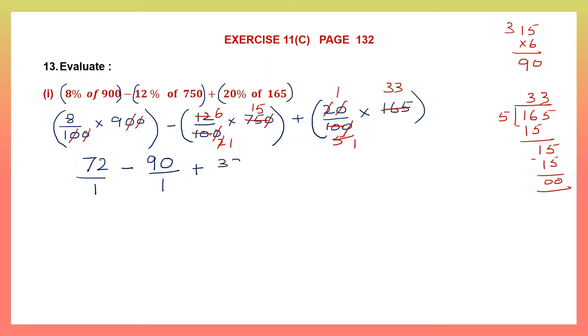So that becomes 72 minus 90 plus 33. Now let's add the numbers which have the same sign. 72 plus 33 equals 105, which becomes plus 105 minus 90. 105 minus 90 is 15. So my answer to this question is 15. This is my final answer.